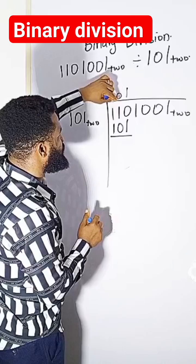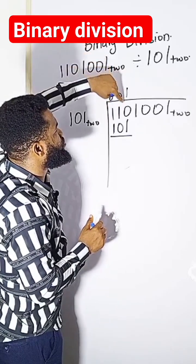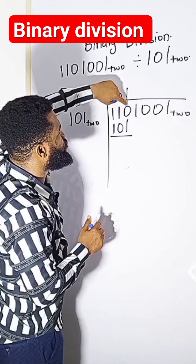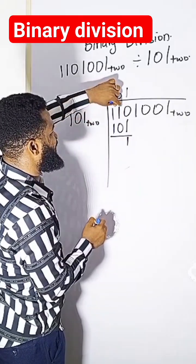...minus one, so I will borrow. Call it two, put it here. Two minus one is one. One minus zero is zero.